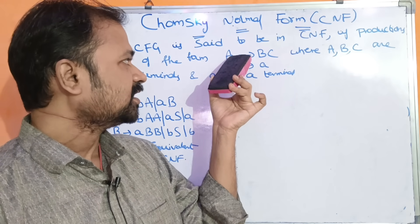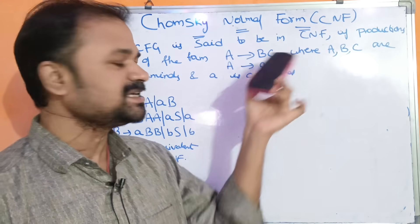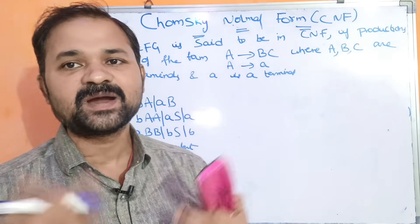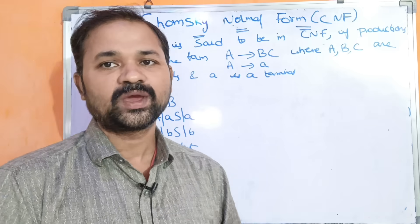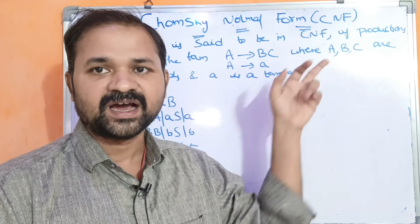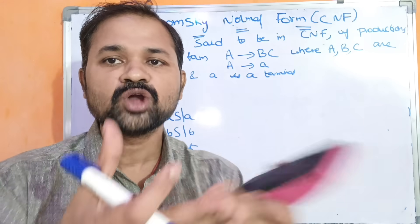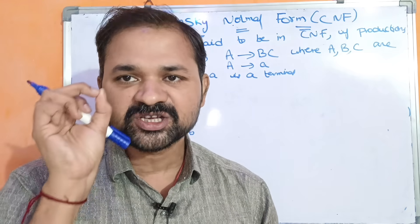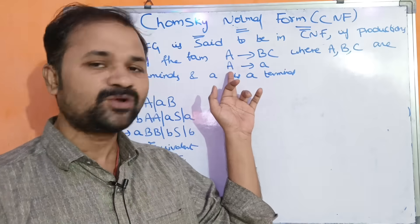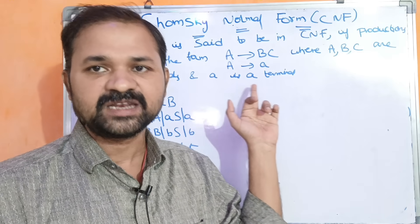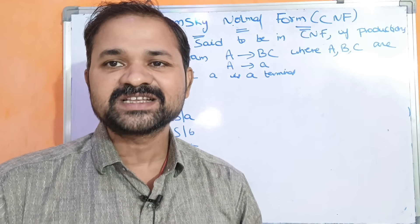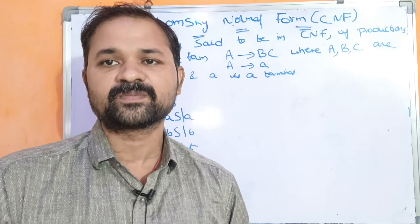Here A, B, C are variables — non-terminals — whereas small 'a' is a terminal. So if the left-hand side contains one non-terminal and the right-hand side contains two non-terminals, or the right-hand side contains one terminal, then we can say that production is in Chomsky Normal Form.